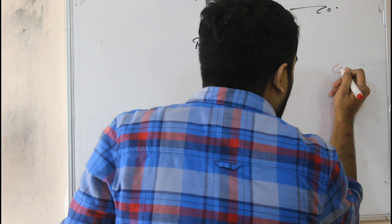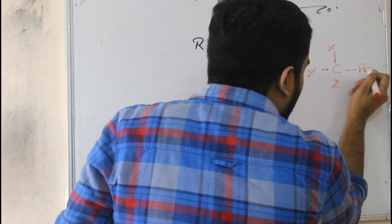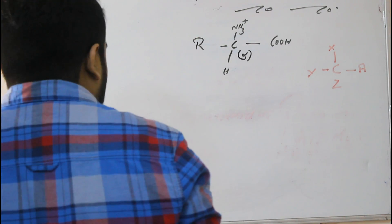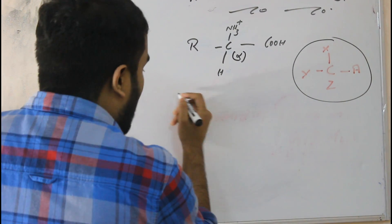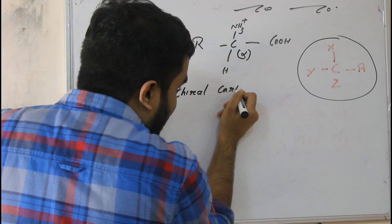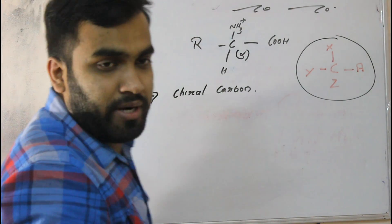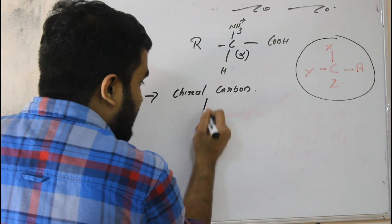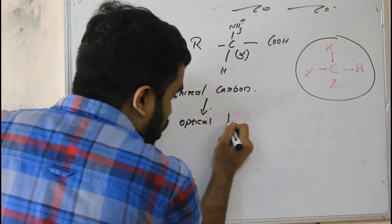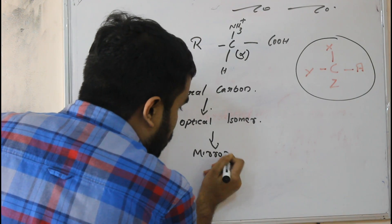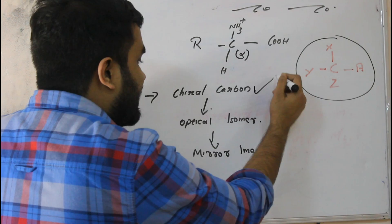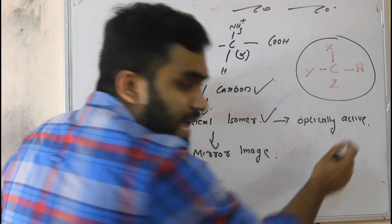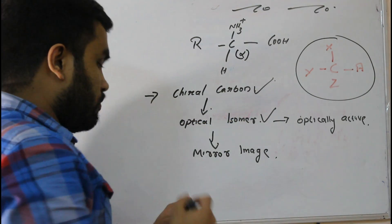What we have to see here is the chirality of the carbon. Chirality means if this is a carbon, all four valences of carbon must be different — none of them must be the same. A carbon with all four different valences is called a chiral carbon. Whenever we have a chiral carbon, it gives optical isomers — a mirror image. Compounds having chiral carbon are optically active.